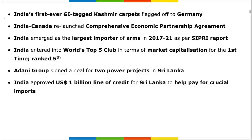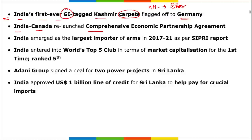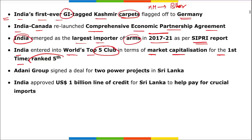Let's revise some previous current affairs. India's first-ever GI-tagged Kashmir carpets were flagged off to Germany. Mithila Makhana was given the GI tag and is related to Bihar. India and Canada relaunched a Comprehensive Economic Partnership Agreement. India emerged as the largest importer of arms in 2021 as per a SIPRI report. India also entered the world's top five club in market capitalization, ranked fifth.